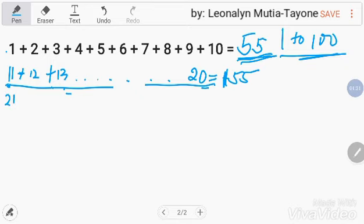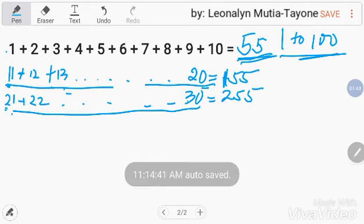Next, yung 21 plus 22 hanggang maging 30 siya, ang answer mo yan ay 255. Kasi nagdagdag ka lang ng 20. Yung 20, 10 times 20 dito. So, that is 20 times 10, that is 200.